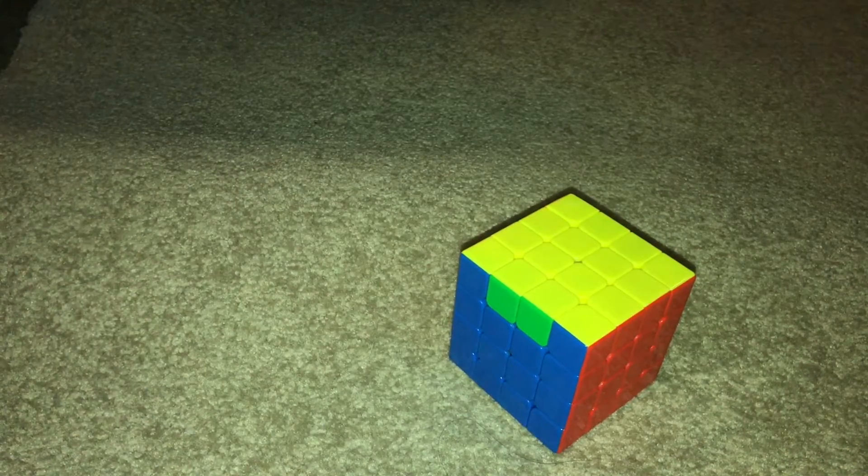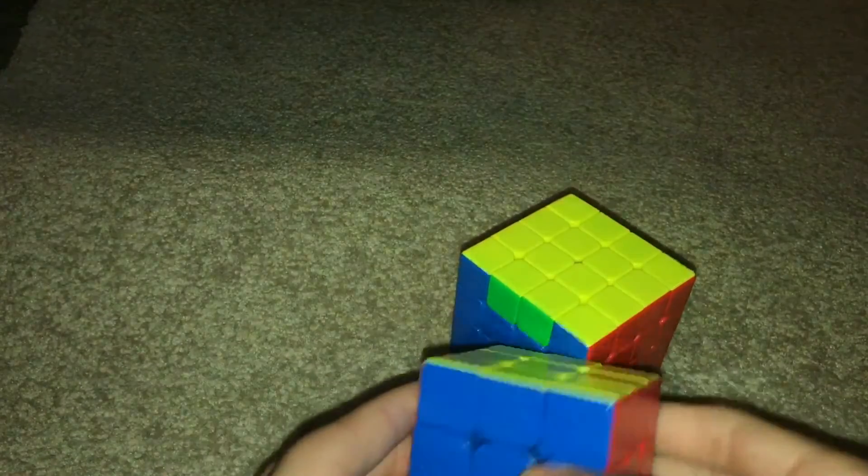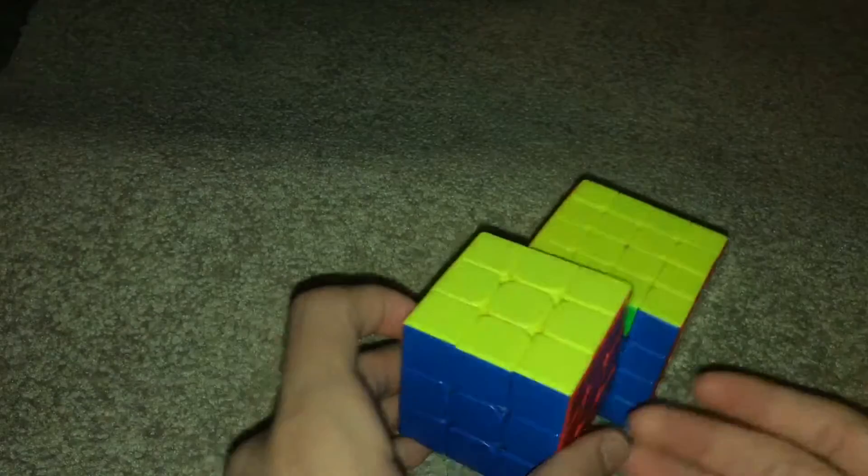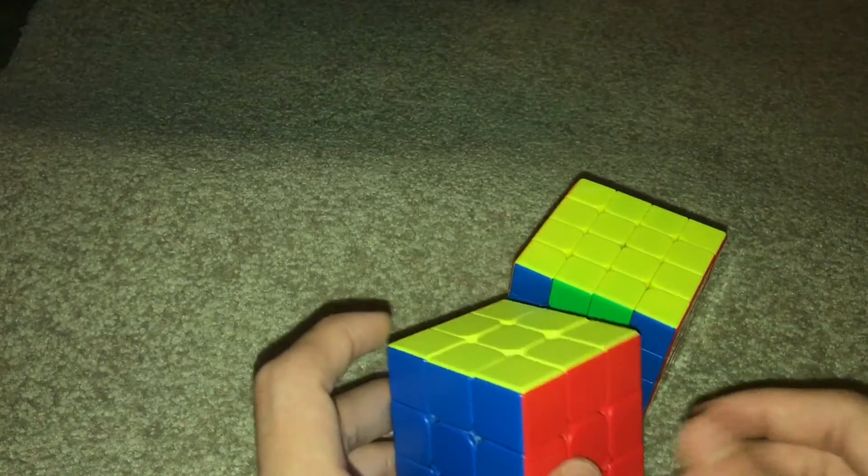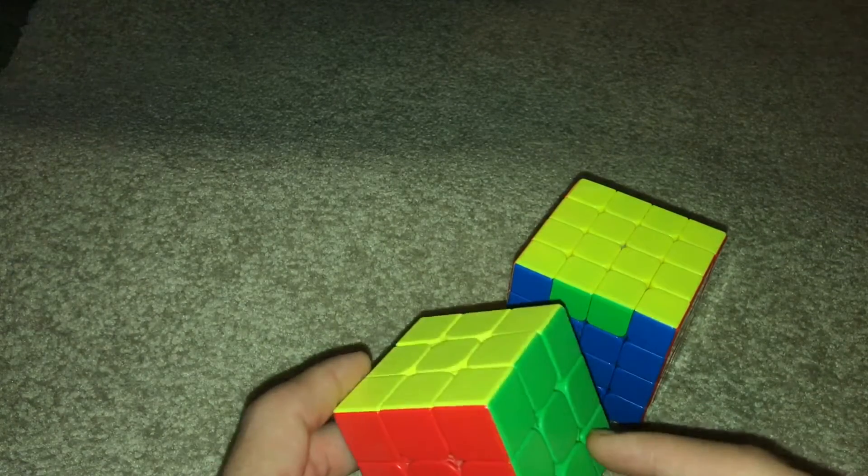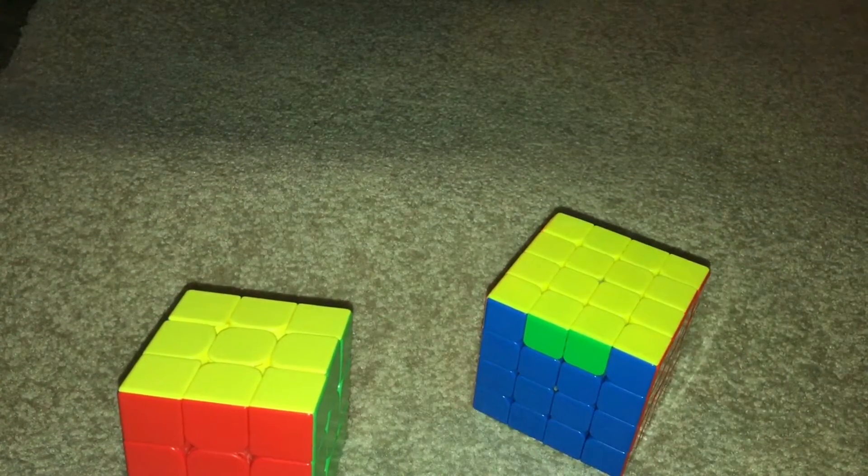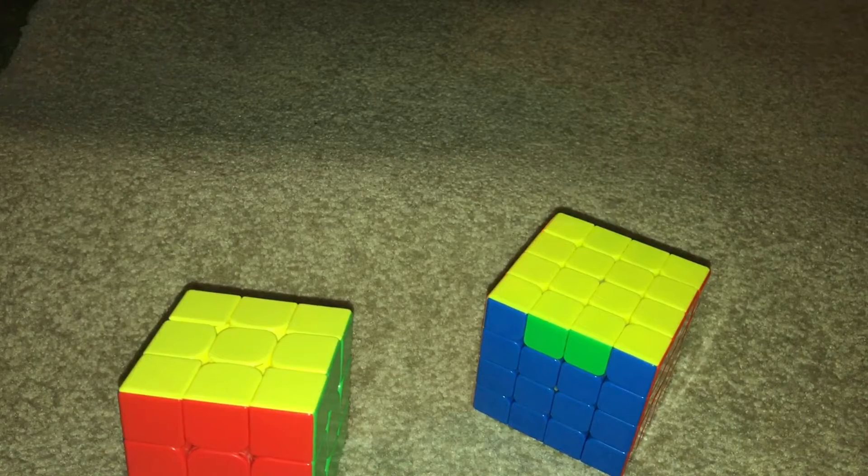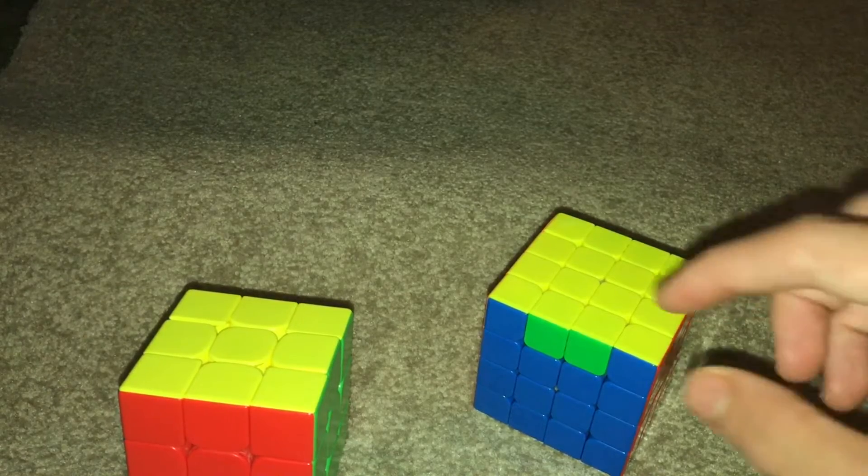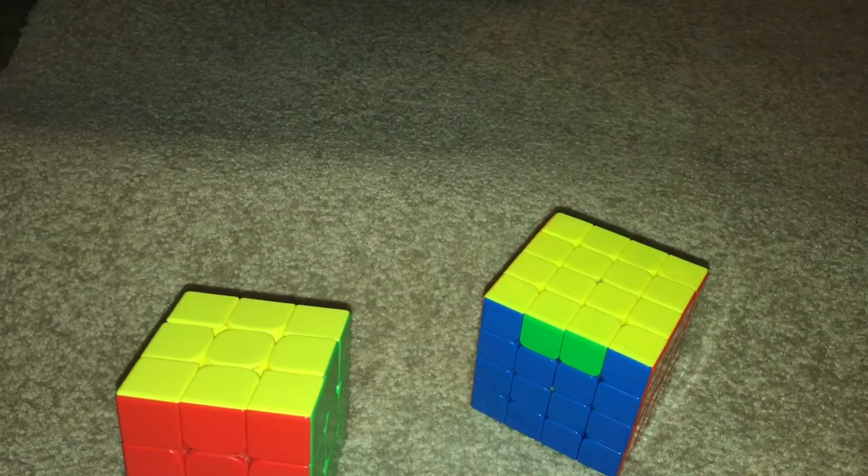So let me solve this real quick. You will never get this on three by three because it doesn't happen on three by three. You gotta put these two edges in the right place on four by four. And if you get an odd number of times that you put them basically opposite, you will get PLL Parity.